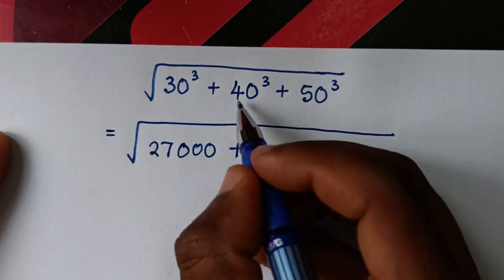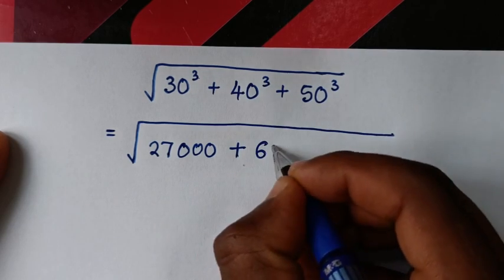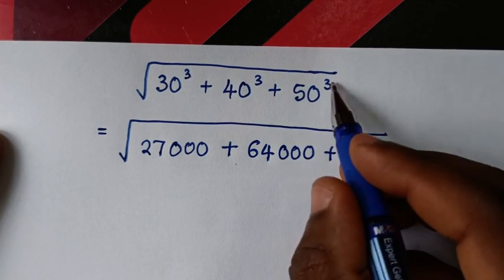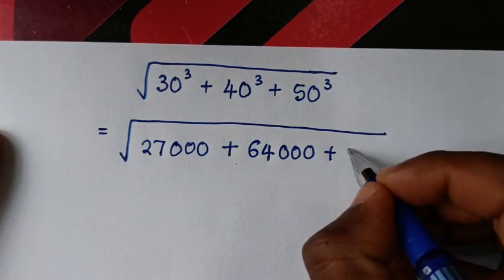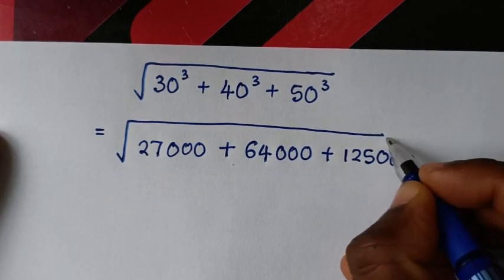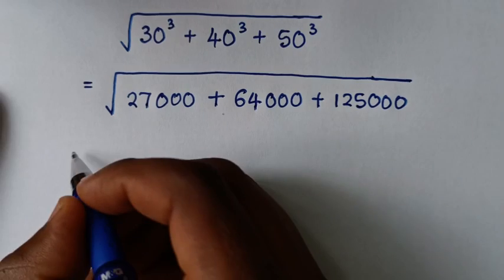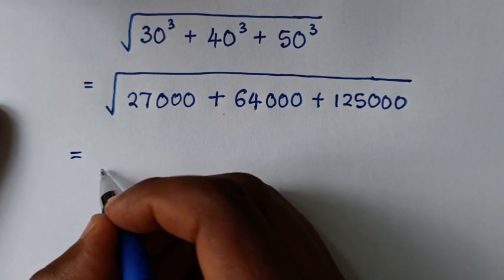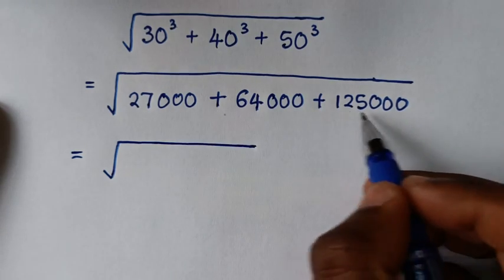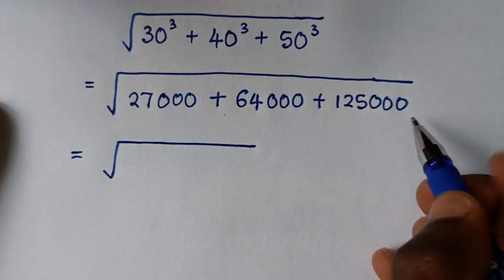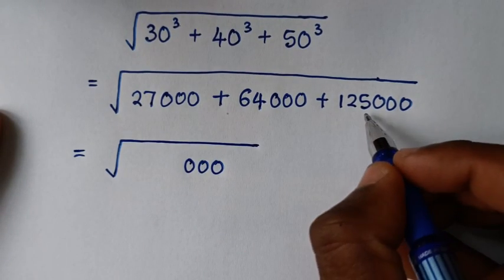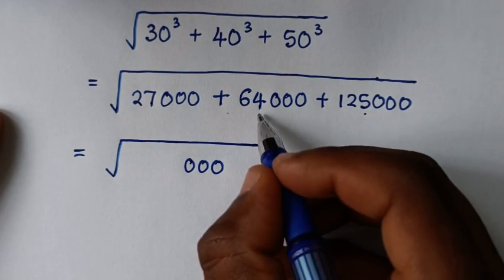Plus 40 to the power 3: 4 to the power 3 is 64, and there are 1-2-3 zeros. Plus 50 to the power 3: 5 to the power 3 is 125, and there are 1-2-3 zeros. We take the sum of all these. The last three digits are zeros (1-2-3), and from the fourth digit onward we add: 5 plus 4 is 9.